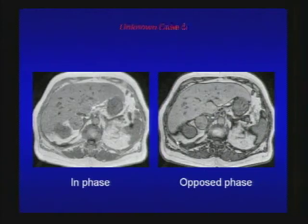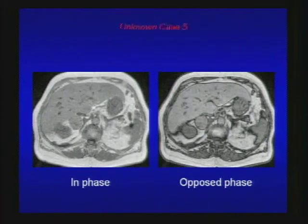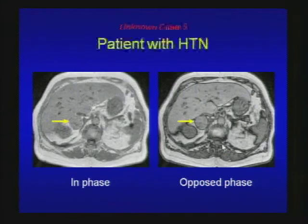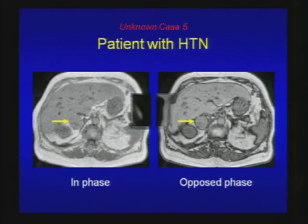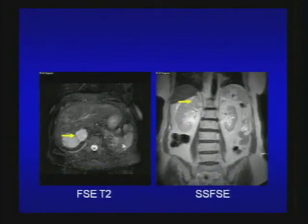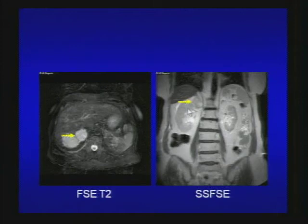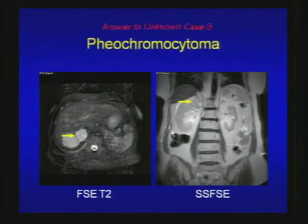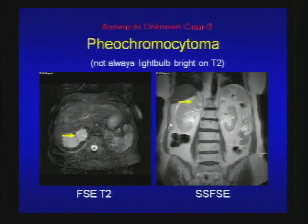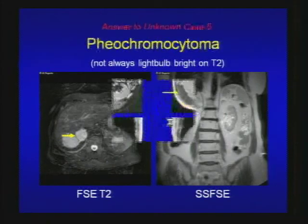Here is unknown case 5: right adrenal gland mass with no significant signal dropout on opposed-phase image when compared to spleen or skeletal muscle — not typical for adrenal adenoma. This patient has hypertension, and on additional images it's fairly bright on T2-weighted image but not quite light bulb bright. This is a case of pheochromocytoma — not always light bulb bright on T2.